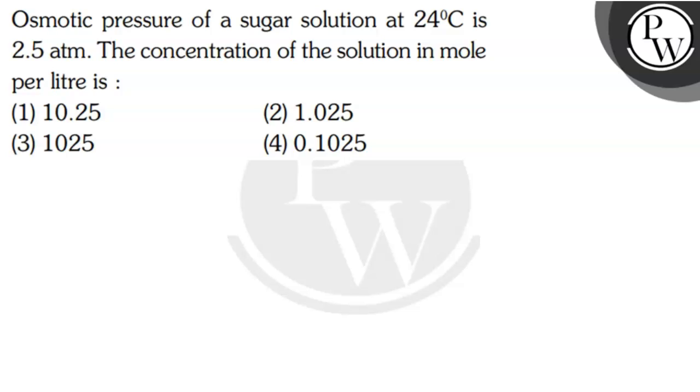Hello, let's read the question. The question says that osmotic pressure of a sugar solution at 24 degrees Celsius is 2.5 atm. The concentration of the solution in mole per liter is: option 1, 10.25; option 2, 1.025; option 3, 1025; option 4, 0.1025. What is the key concept here?